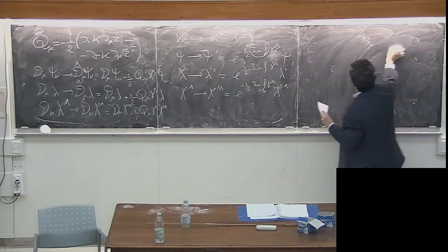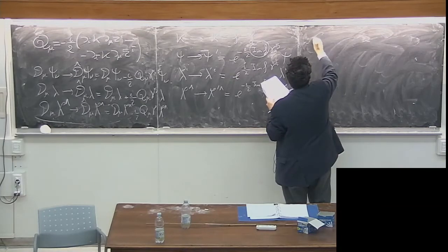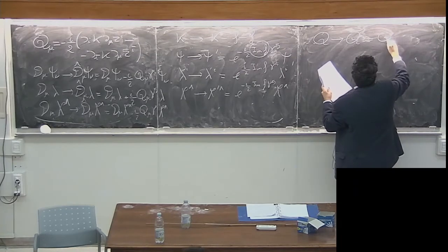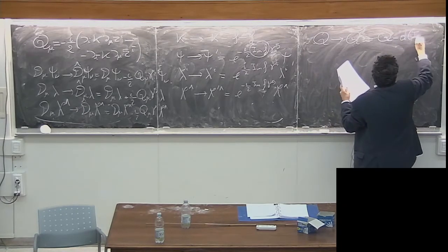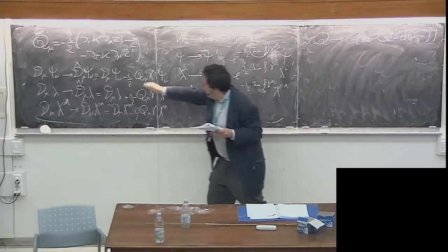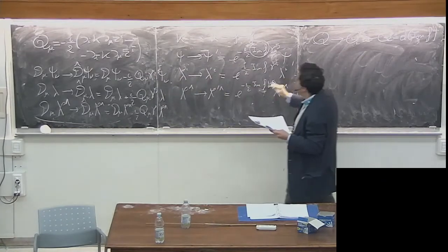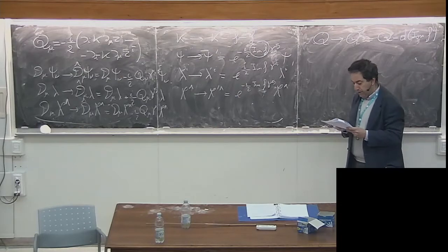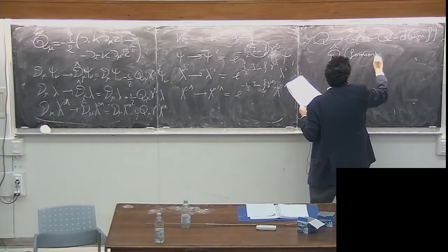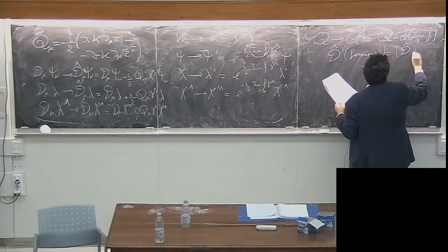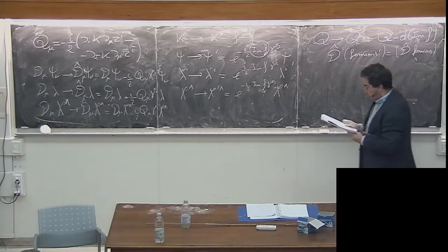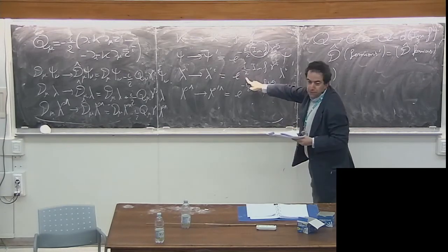You check: transform kappa, then curly Q transforms. These will transform covariantly. Indeed, curly Q transforms under Kähler transformation precisely as a connection: curly Q prime = curly Q minus d(Im f). You can transform the fermions accordingly and verify that D-hat prime of fermion prime equals D-hat of fermion prime — it's covariant.